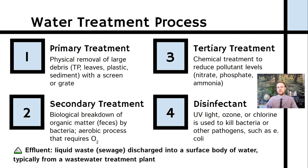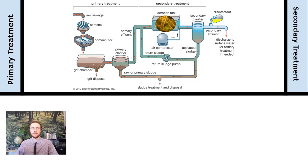I used the word 'effluent' there, and I want to make sure we define it. Effluent is basically the wastewater that is discharged from a wastewater treatment plant after it's been treated. It's a really important APES vocab term, not to be confused with 'affluent,' which refers to wealth. Next, we'll take a look at a super helpful diagram that will walk us through these steps in a little more detail.